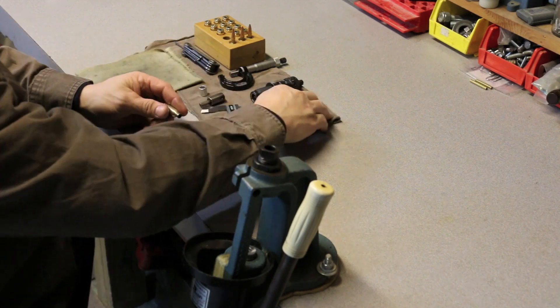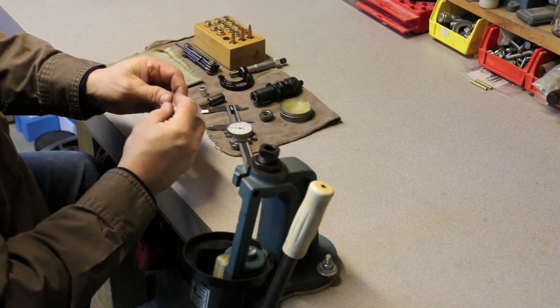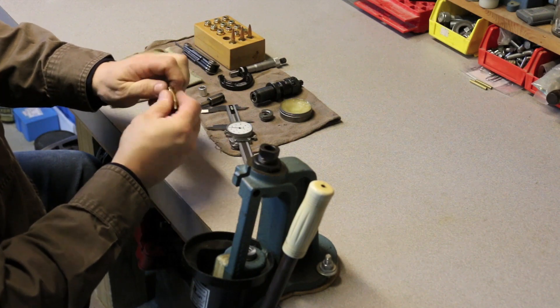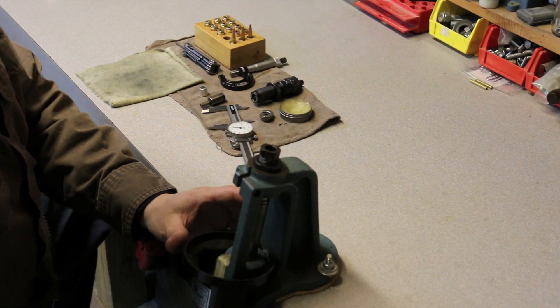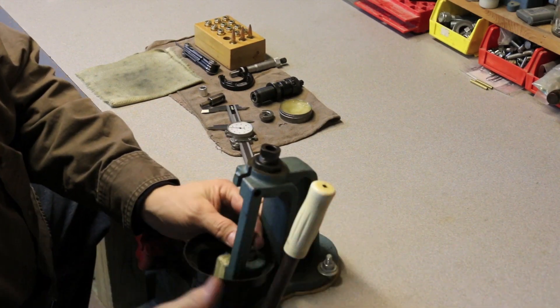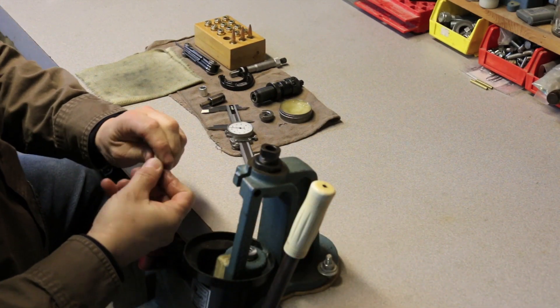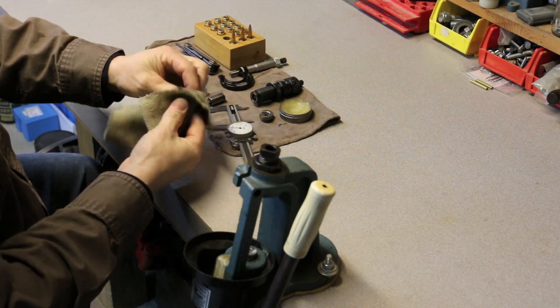So we'll run this cartridge through the die. You use some Imperial Dye Wax on the body of the cartridge, run it through the die, and wipe it off.